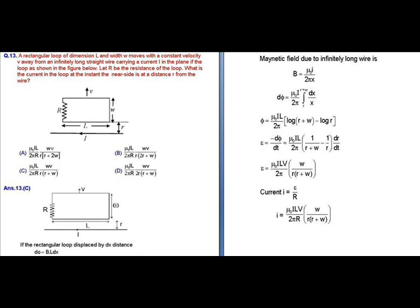If the rectangular loop is displaced by a small distance dx, the magnetic flux dΦ will be equal to B times L times dx. The magnetic field due to the infinitely long wire at a distance x will be equal to B = μ₀I / (2πx).